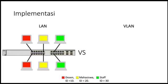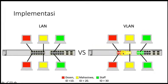Pada jaringan LAN, meskipun networknya kita pisah, tapi jika switchnya tidak manageable atau tidak dikonfigurasi dengan VLAN, maka datanya akan bercampur. Berbeda dengan menggunakan VLAN. Kalau menggunakan VLAN, setiap port-portnya di sini — port yang warna merah ini — sudah kita tag ID VLAN-nya, yaitu ID VLAN dosen dengan ID 10.